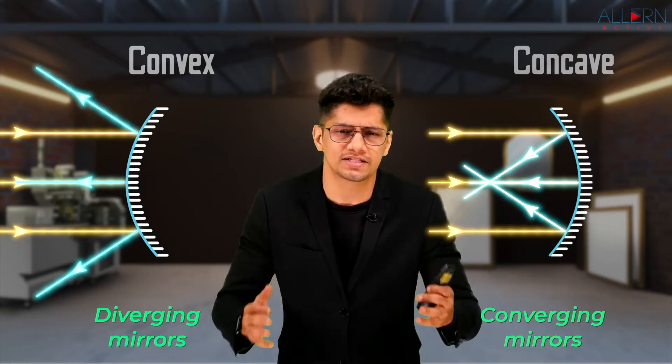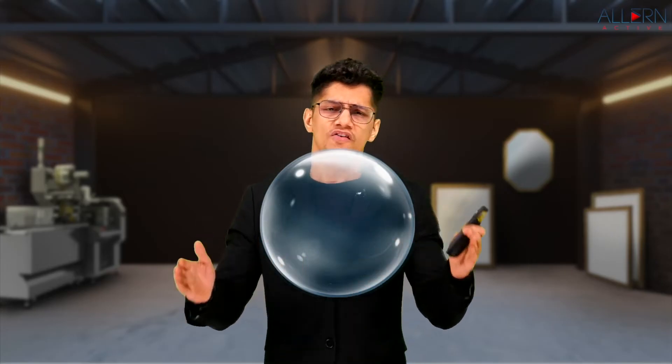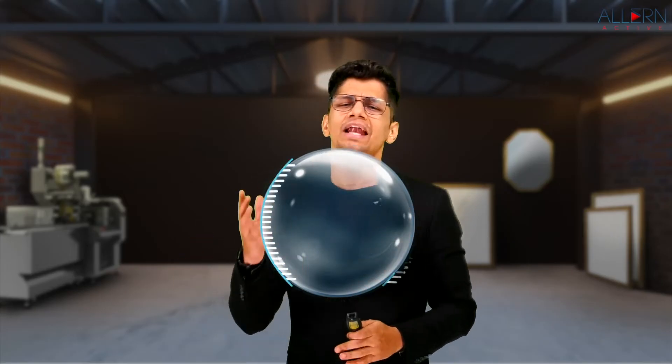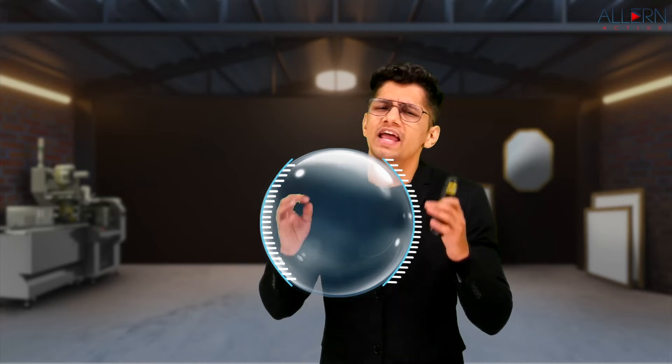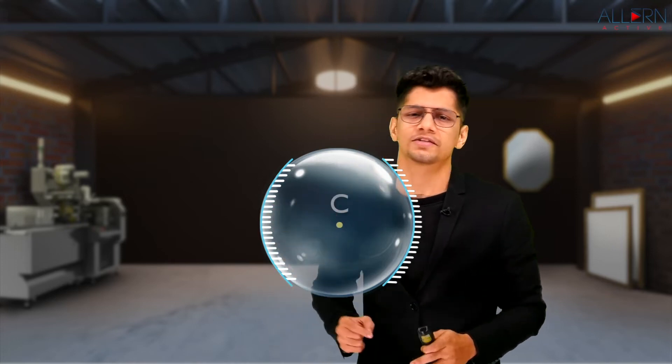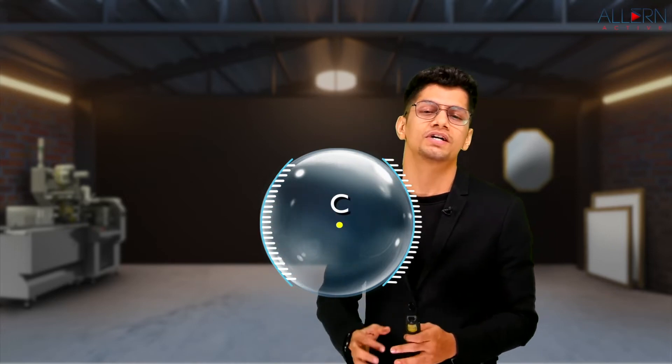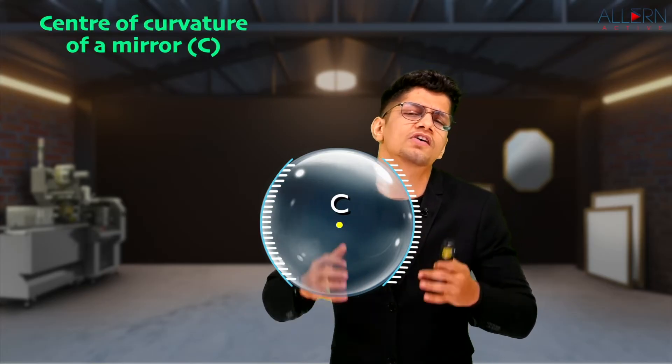Now we have understood how reflection of light takes place from spherical mirrors. We need to understand certain common terms — they are common for both spherical mirrors. To make spherical mirrors, we want a transparent glass sphere. From a transparent glass sphere we can make two types of mirrors: convex mirrors and concave mirrors. Every sphere has a center, and the center that we have over here is called the center of curvature.